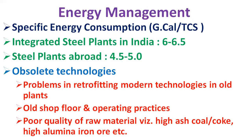The higher rate of energy consumption is mainly due to obsolete technologies, problems in retrofitting modern technologies in old plants, poor operating practices, and poor quality raw materials such as high-ash coal or coke and high-alumina iron ore. Energy consumption in steel plants is gradually reducing due to technological upgradation, utilization of waste heat, and use of better quality inputs. The Ministry of Steel, through various schemes and regulations, is facilitating reduction in energy consumption and environmental pollution.